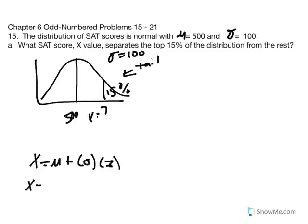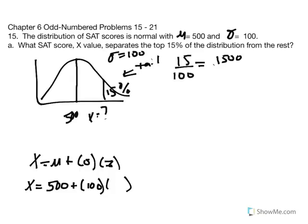Let's replace variables with what we already know: the mean is 500, plus the standard deviation of 100 multiplied by the Z score. To find the Z score, we convert 15% into a proportion: 15 divided by 100 gives us 0.1500. We use the unit normal table, column C representing proportion in the tail, and look for the closest value to 0.1500.